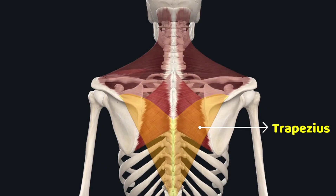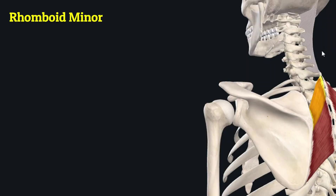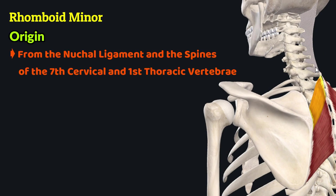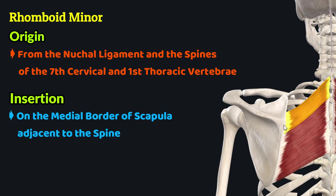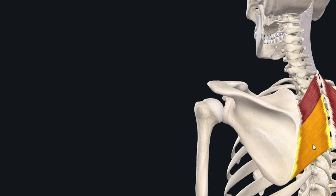The rhomboid minor muscle originates from the nuchal ligament and the spines of the seventh cervical and first thoracic vertebrae. The fibers of the rhomboid minor muscle then travel inferolaterally to insert on that portion of the medial border of the scapula which is just adjacent to the spine of the scapula.